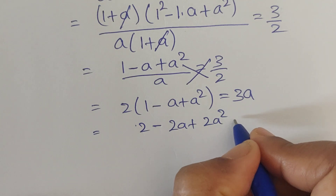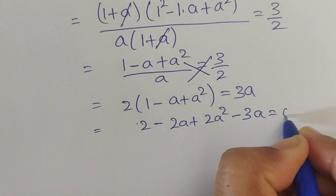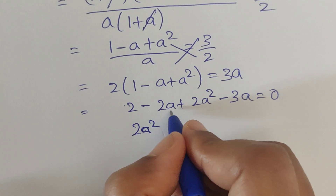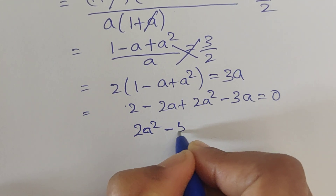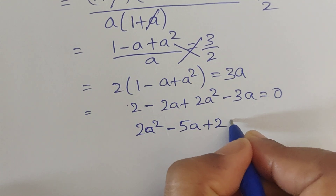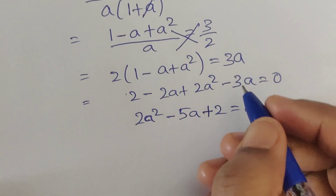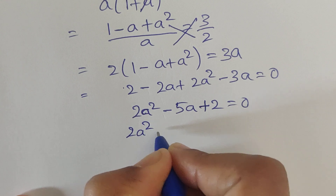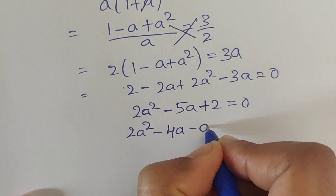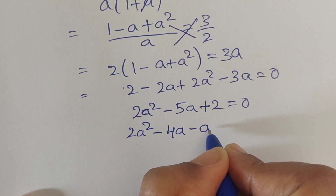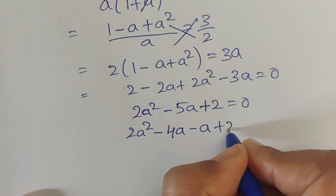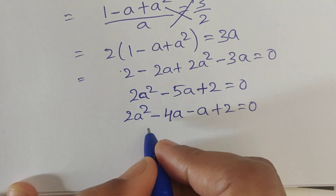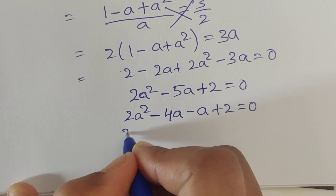Write 3a to the left side: 2a² minus 2a minus 3a plus 2 equals 0. So 2a² minus 5a plus 2 equals 0. We can split minus 5a as minus 4a minus a, so 2a² minus 4a minus a plus 2 equals 0.